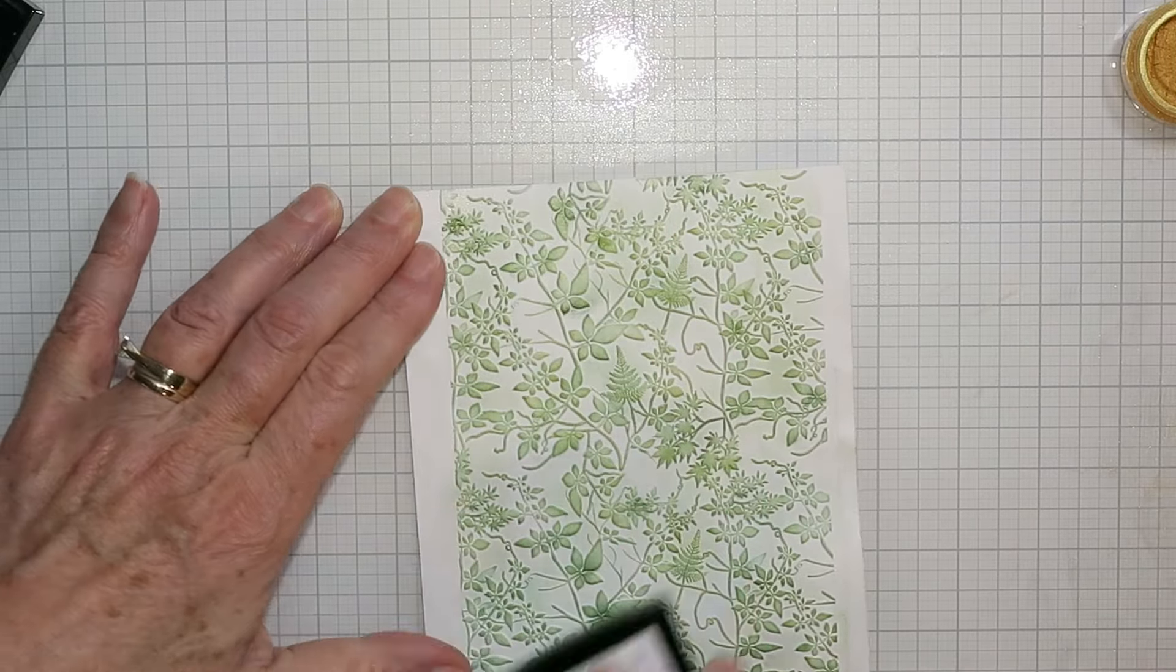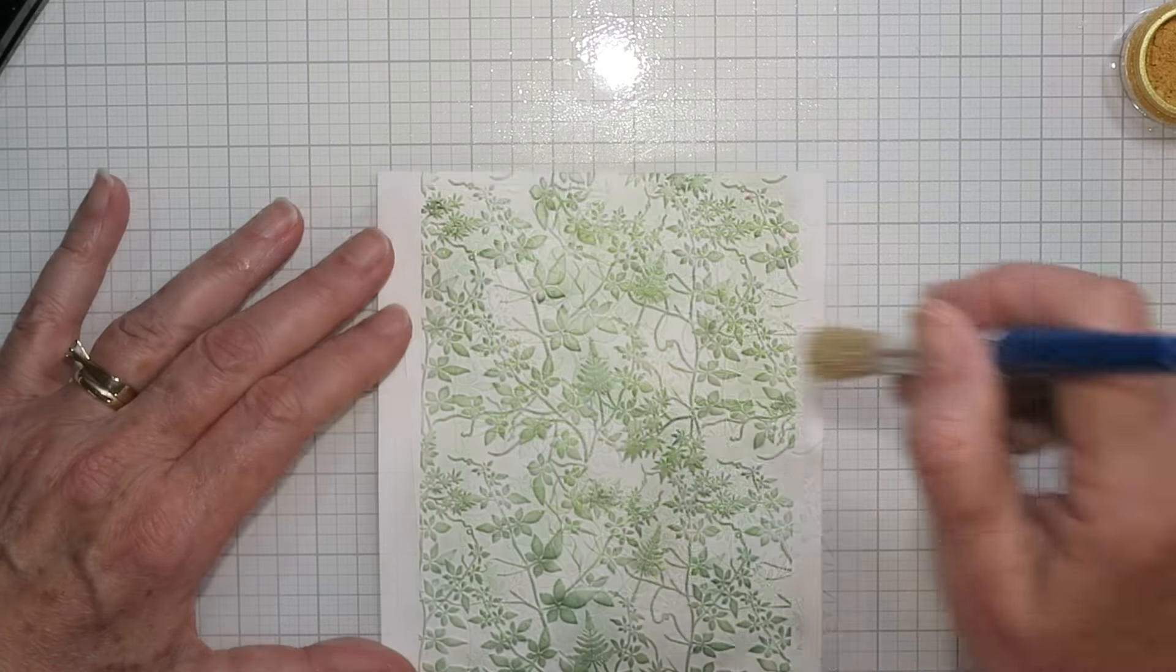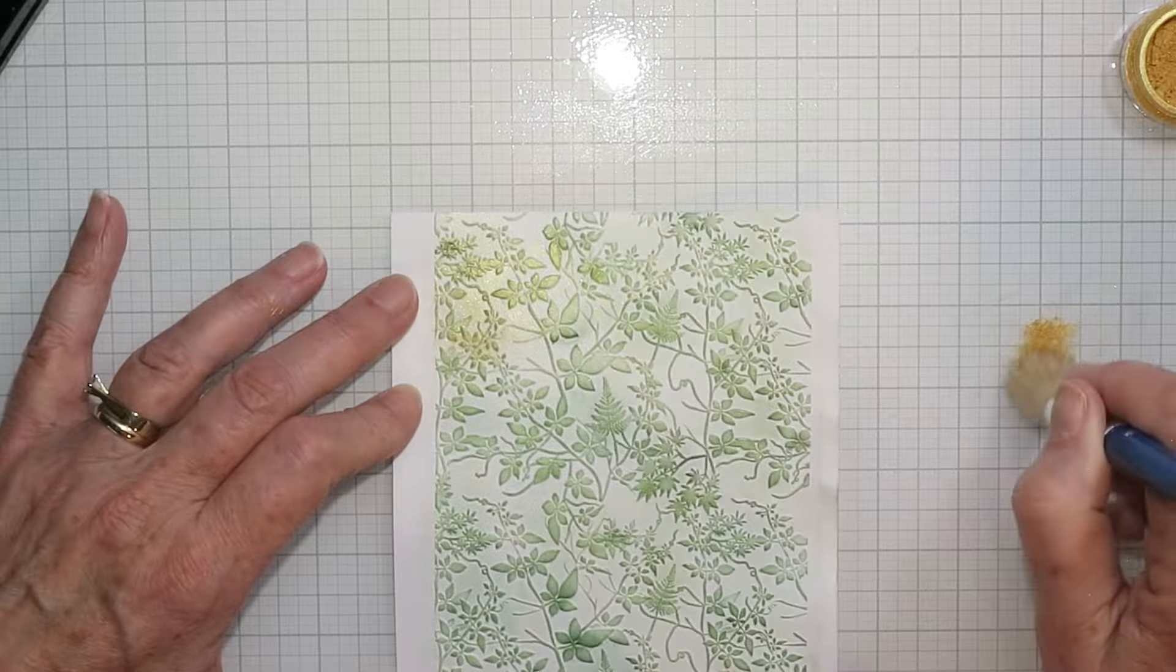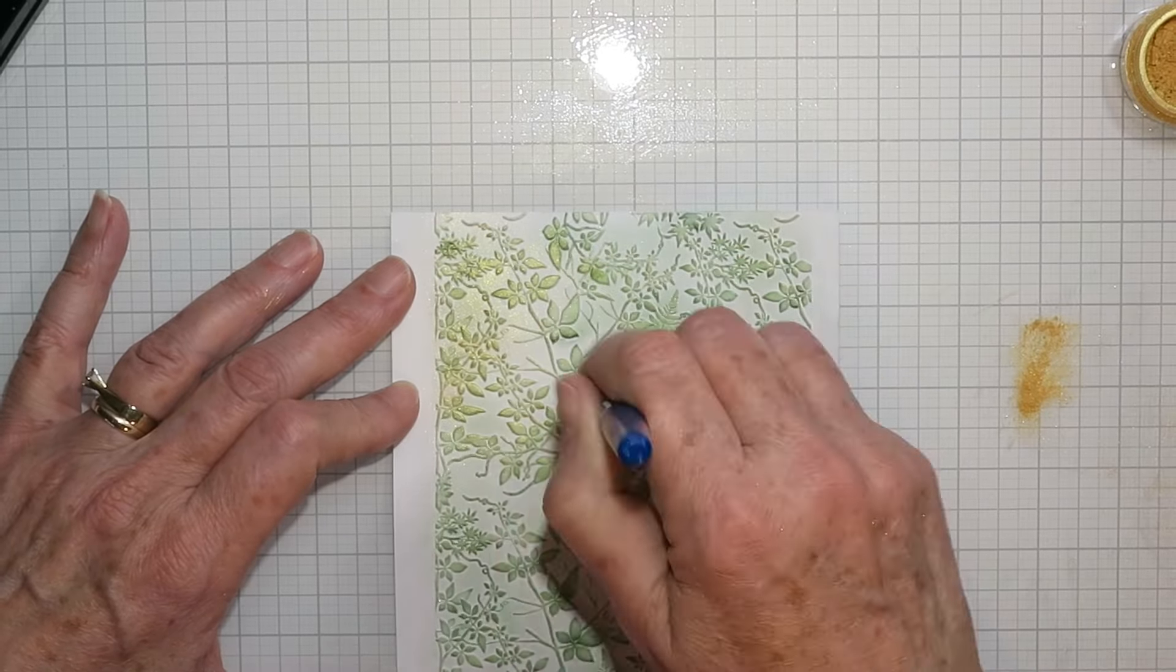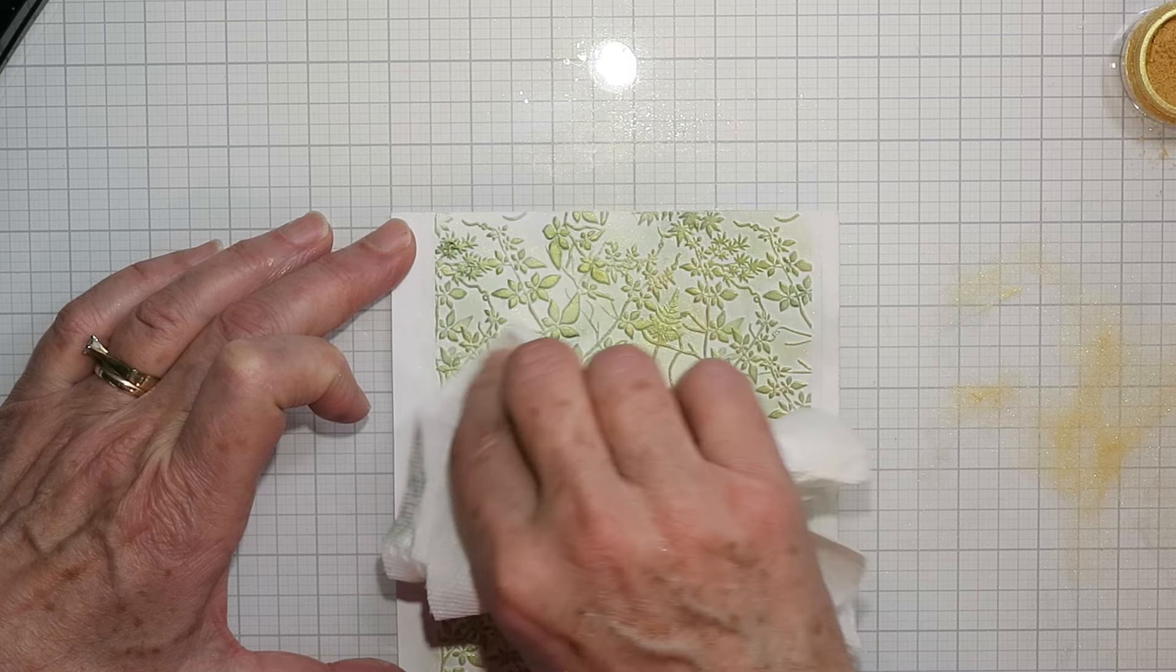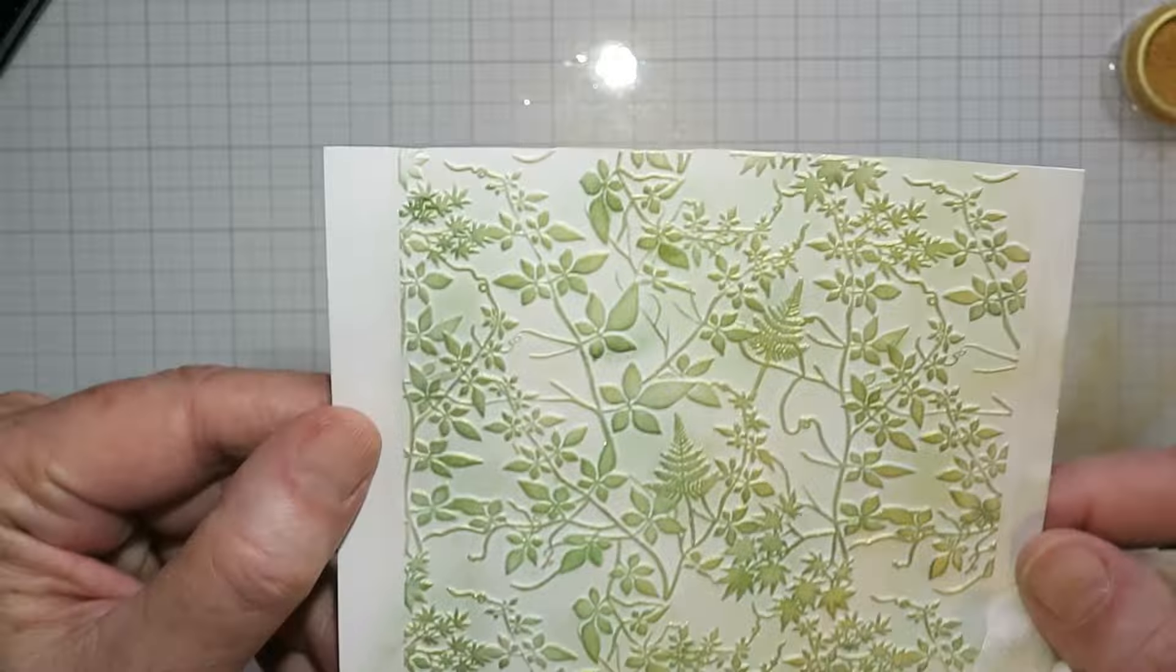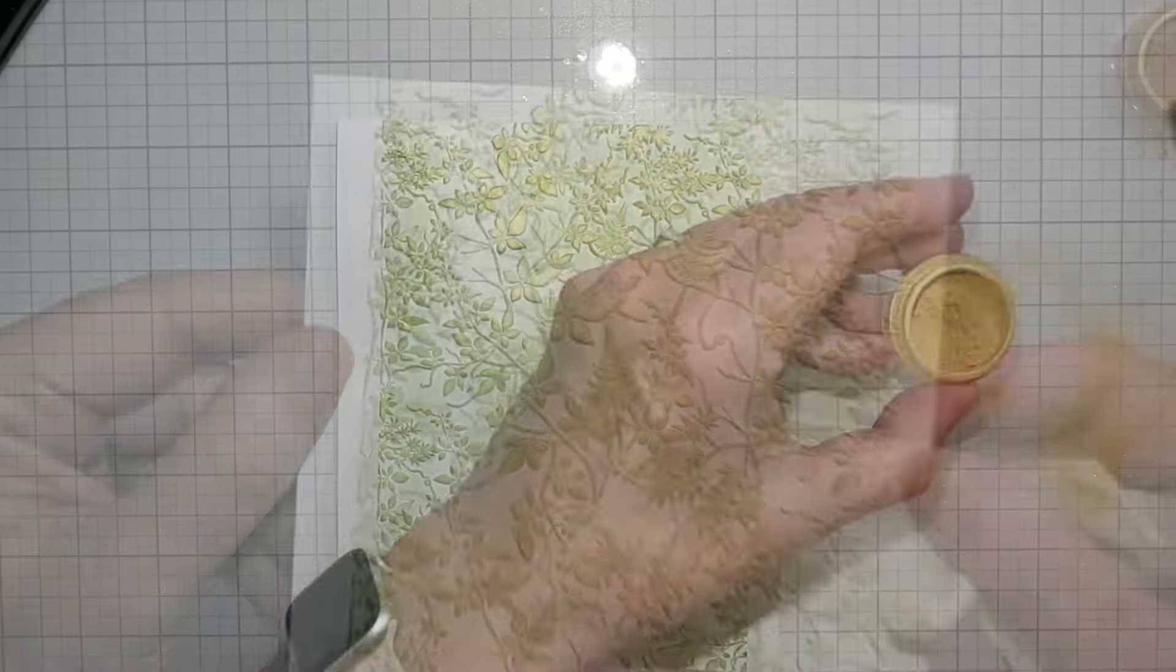It's very hard to see the gold on this go around—it's there in real life, the camera doesn't show it very well. But I misted that just quickly to help set the Perfect Pearls, and then I went over a second time with the Versamark ink again, brushing in different directions, and brushed a second layer of the Perfect Pearls on top.